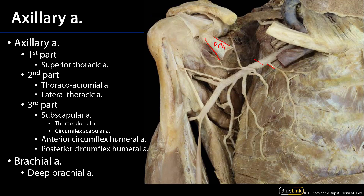The second part of the axillary artery is behind pectoralis minor muscle and has two major branches. There's the thoracoacromial artery, which supplies quite a few structures with blood — subclavius, pectoralis major, pectoralis minor — and has branches to the deltoid muscle, doing quite a bit of blood supply to the general axillary region. The other branch is the lateral thoracic artery, which descends down the lateral aspect of the thorax to supply serratus anterior with blood.